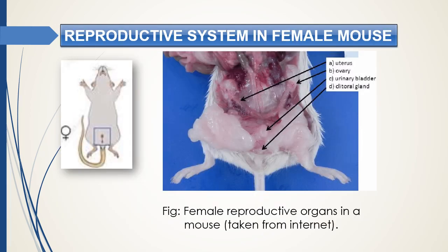Let us have a quick view of the reproductive system in female mice. Here I am showing mainly the uterus, which can be seen in two horns — therefore in rat and mice it is termed a bicornuate uterus. We can also see the ovaries; normally they are buried under fat pads. This is the cervix of the uterus and the vagina. Ovarian hormones will change the entire uterus and the vaginal canal during the estrus cycle.